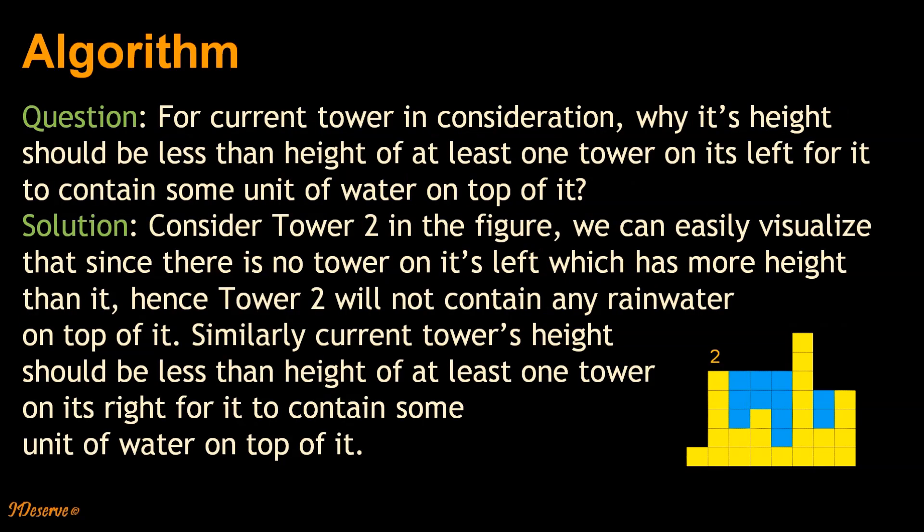So the next question is: for current tower in consideration, why should its height be less than height of at least one tower on its left for it to contain some unit of water on top of it?